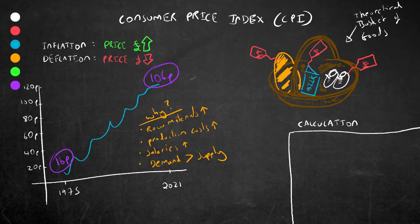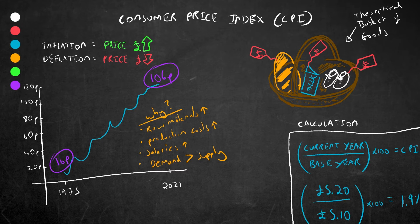CPI is always measured against a base year. So if the average cost of a basket in 2021 is £5.20 and the average cost of that same basket in 2020 is £5.10, the increase is £5.20 divided by £5.10 times 100, which is 1.019 or simply 1.9% rise.